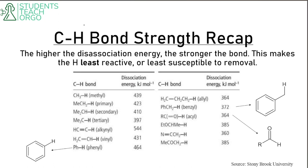In this case, we're going to deal with anions. So if a hydrogen is deprotonated, you are going to get a carbanion. So the more stable the carbanion, the lower the dissociation energy.